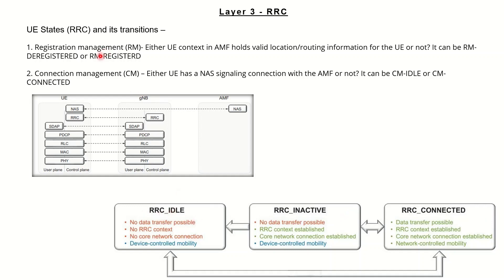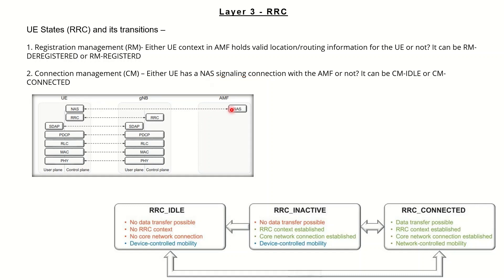Before getting into these three RRC modes, let's understand registration management and connection management first. Registration management is related to the registration of the UE at the core network, so that the core network can have all the valid location and routing information of the user — this is considered RM registered mode. Similarly, if NAS signaling connectivity starts happening between the core network and the user, it is considered CM connected mode.